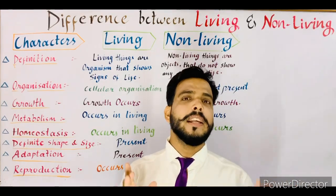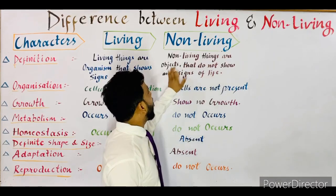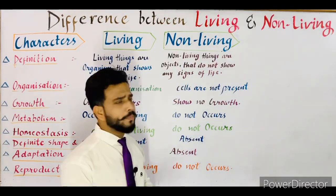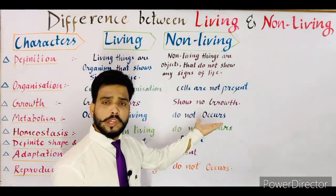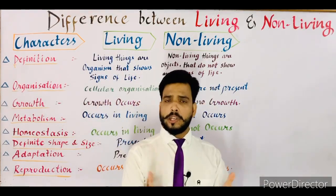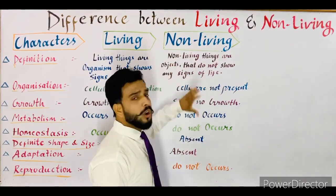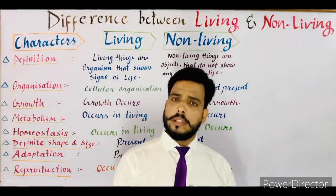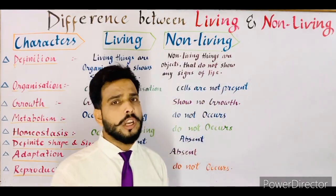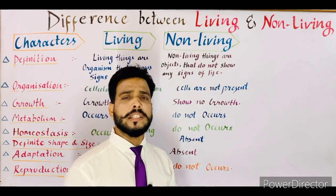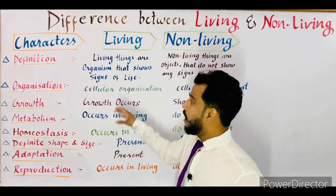Now what about non-living? Non-living things are generally objects that do not show any sign of life. They do not show reproduction, they do not show adaptation, and other living characters. If any object does not show the sign of life, then you can say it is non-living. It is not an organism — it's only an object.